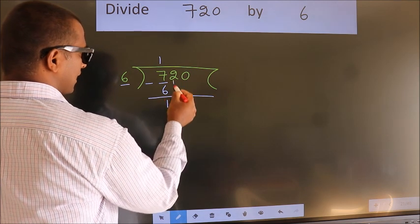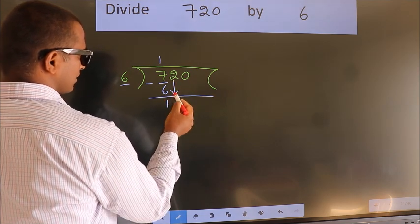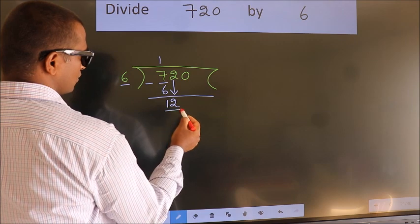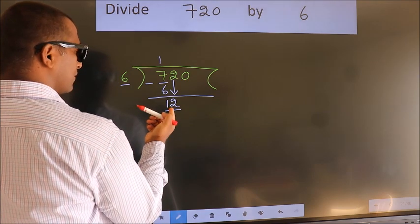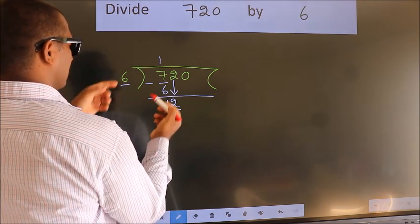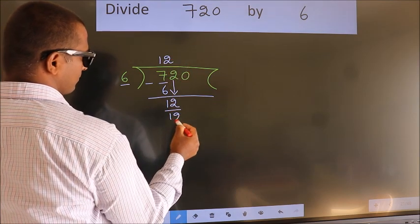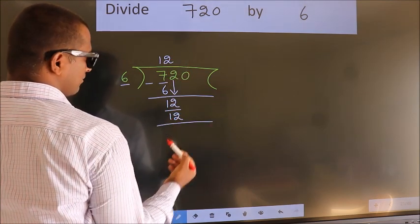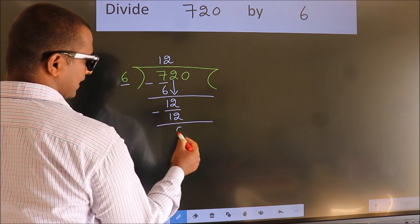After this, bring down the beside number. So, 2 down. So, 12. When do we get 12? In the 6 table, 6 times 2 is 12. Now, we subtract. We get 0.